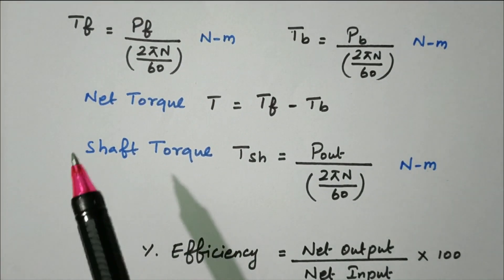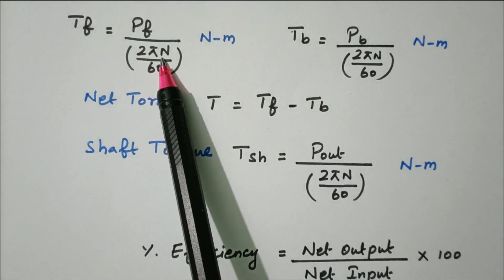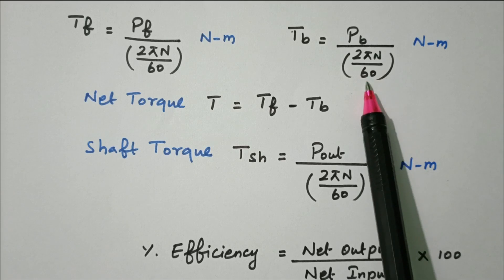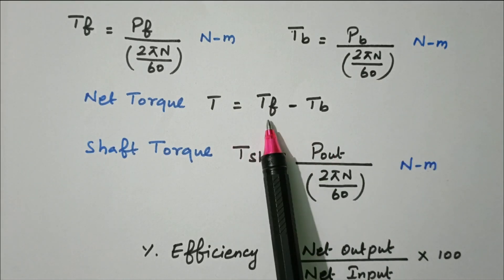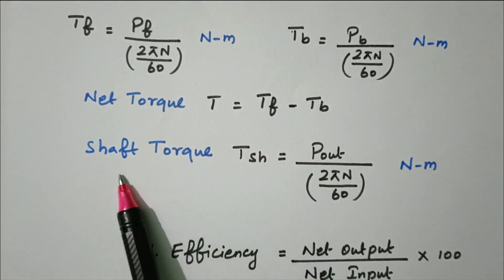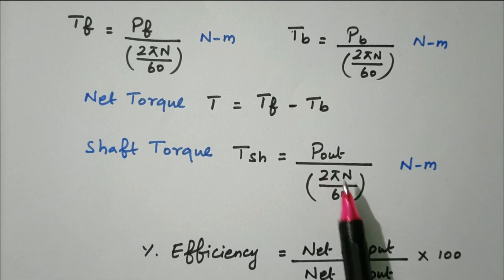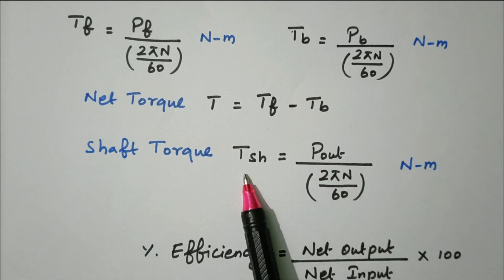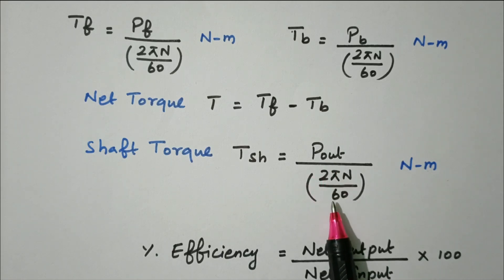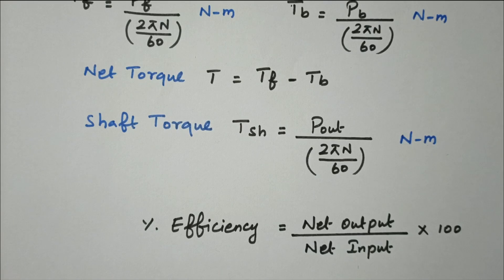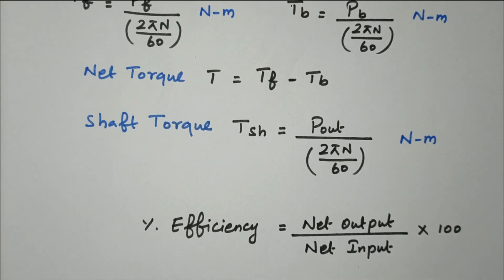For torque: forward torque Tf equals Pf divided by (2πN/60) newton-meters. Backward torque Tb equals Pb divided by (2πN/60) newton-meters. Net torque is Tf minus Tb. Shaft torque Tsh equals P_out divided by (2πN/60). Efficiency is the general formula: net output divided by net input multiplied by 100 percent. This completes the without core loss case.